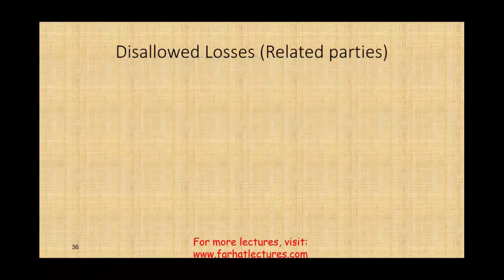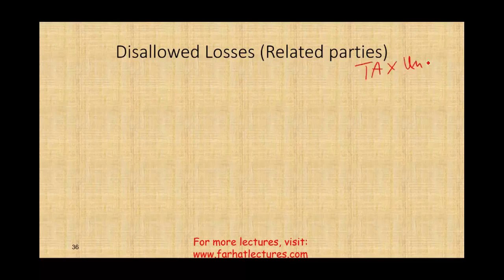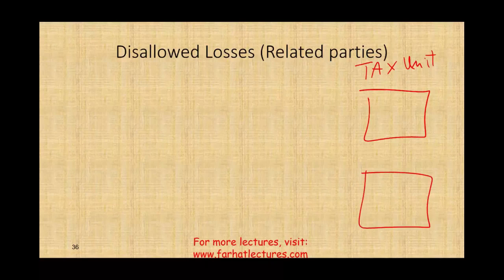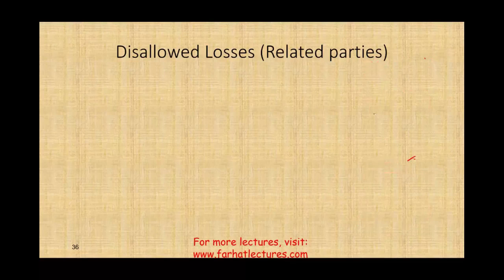Let's start talking about disallowed losses. The first thing we're going to talk about is related parties. In taxes we like losses — we want to have losses, we look for losses. So the IRS will disallow certain losses because they think they are not being done at an arm's length transaction, or they believe they are being done within the same tax unit. For the IRS, a family — a husband and wife — is the same tax unit. If you own more than 50% of a corporation, you and the corporation are the same tax unit. Therefore you are a related party, and if you incur losses, those losses should not be deductible.